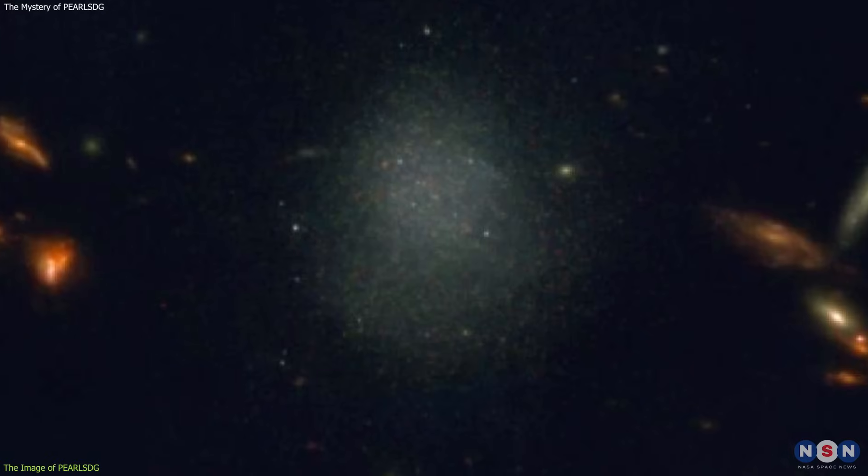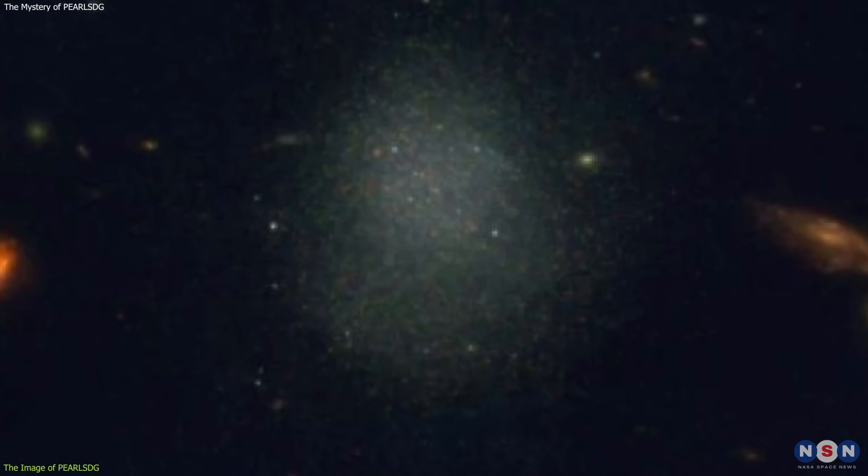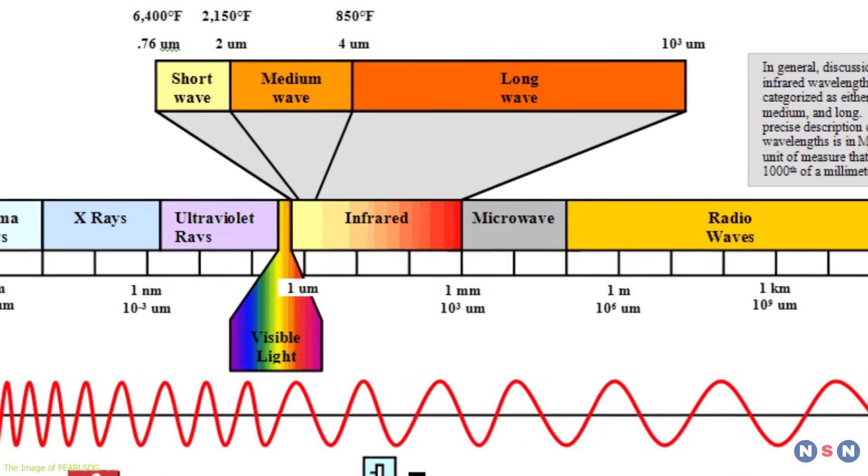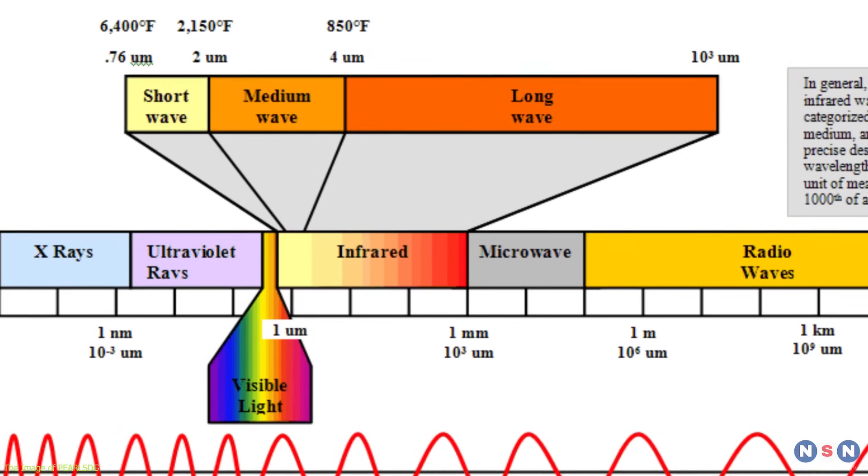The image that you see on the screen is a composite of three different filters, corresponding to three different wavelengths of light: near infrared, mid infrared, and far infrared.